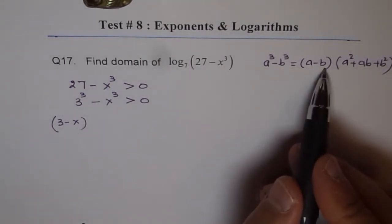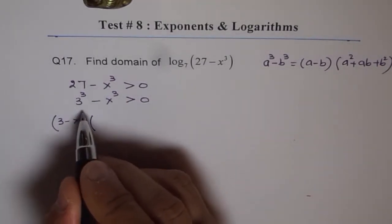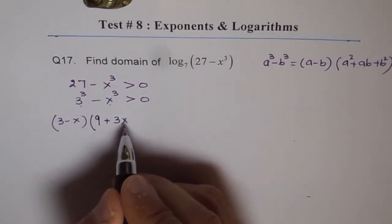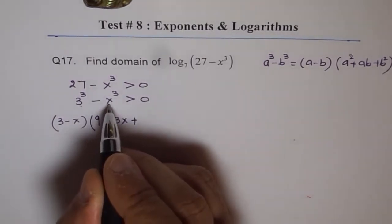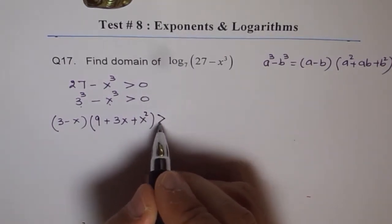a minus b means 3 minus x. a squared, 3 squared means 9 plus a into b which is 3x plus x squared. So that becomes the second factor equal to 0.